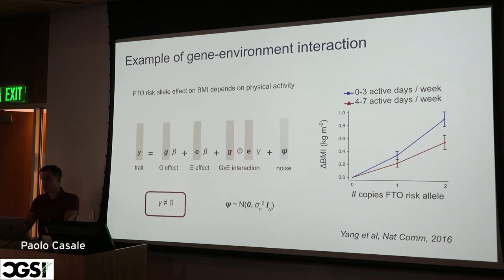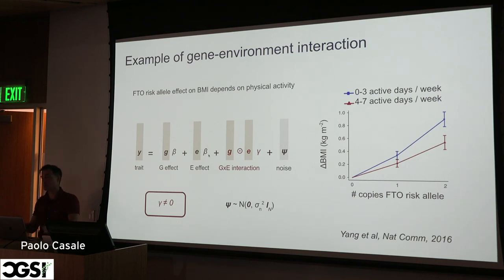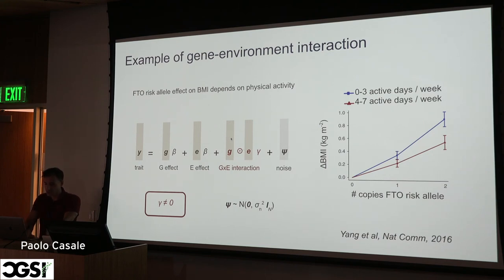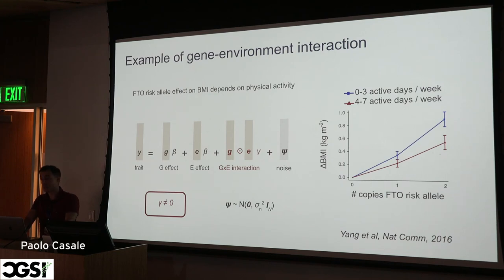We can use a standard linear model to test for it. The trait, BMI, is the outcome, and we have a linear contribution from genetics — the genotype at the FTO risk allele — a contribution from the environment (this binary activity covariate), and then a gene-environment interaction term, plus Gaussian noise. This G×E term is a Hadamard product — element-wise multiplication between the genotype vector and the environment vector. You test for differential effects by testing whether the weight γ is significantly different from zero. That's the standard model for testing interaction with a single environmental variable.